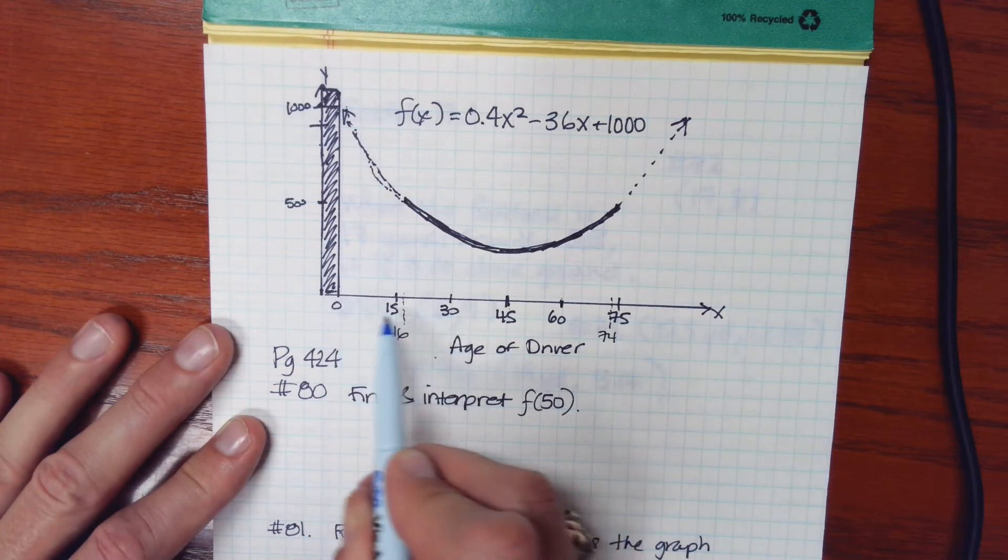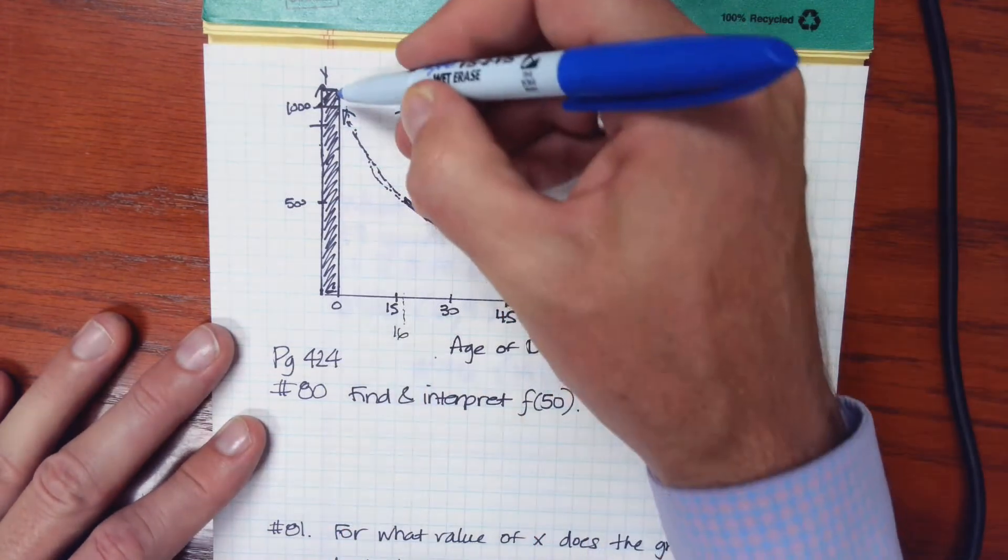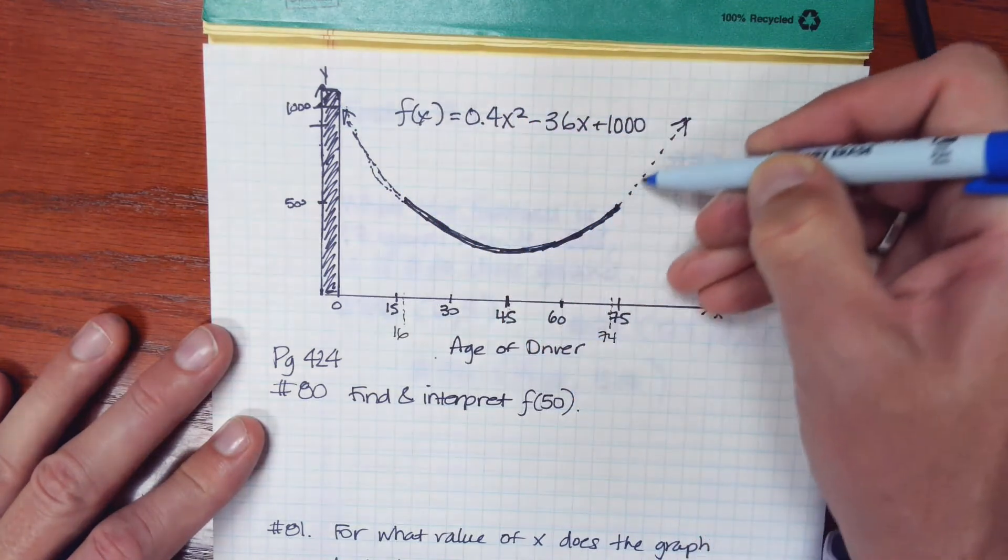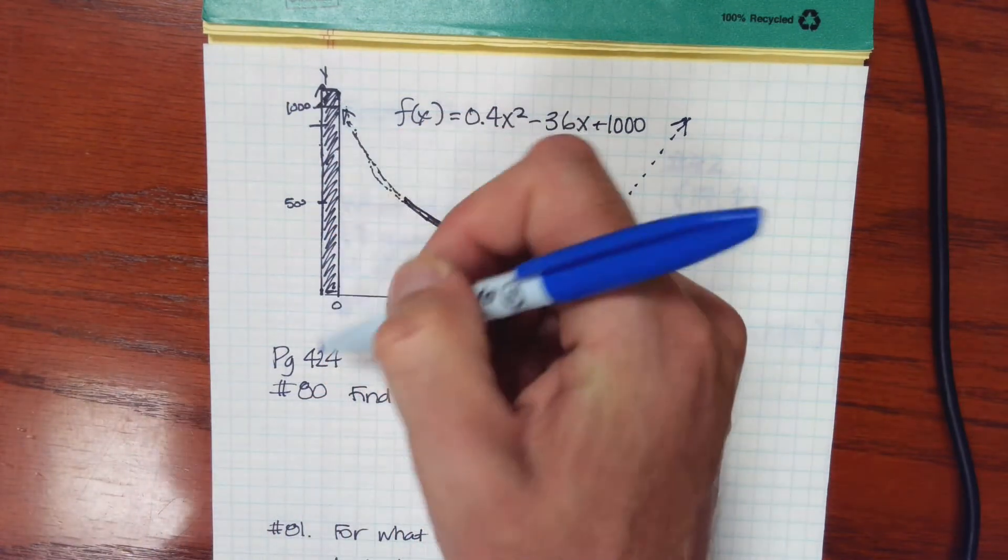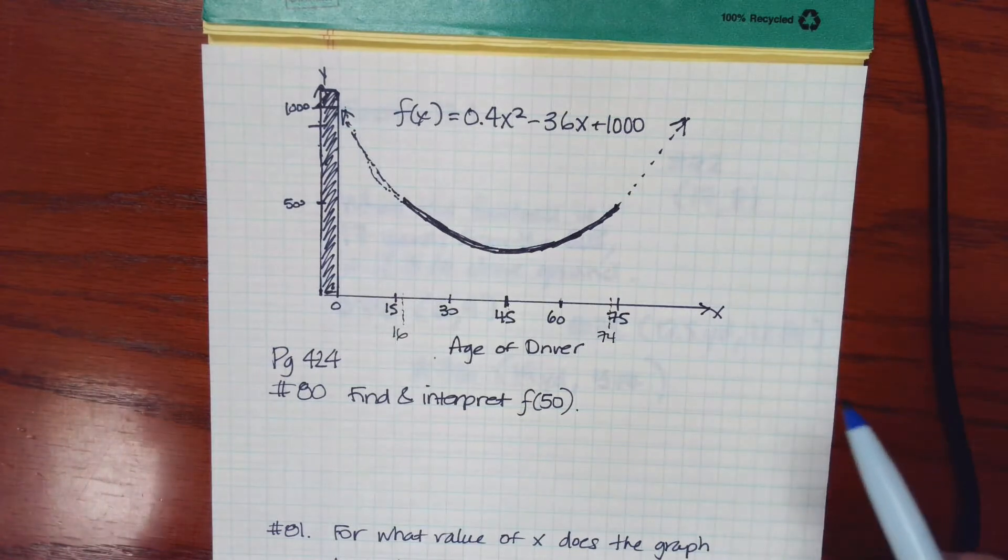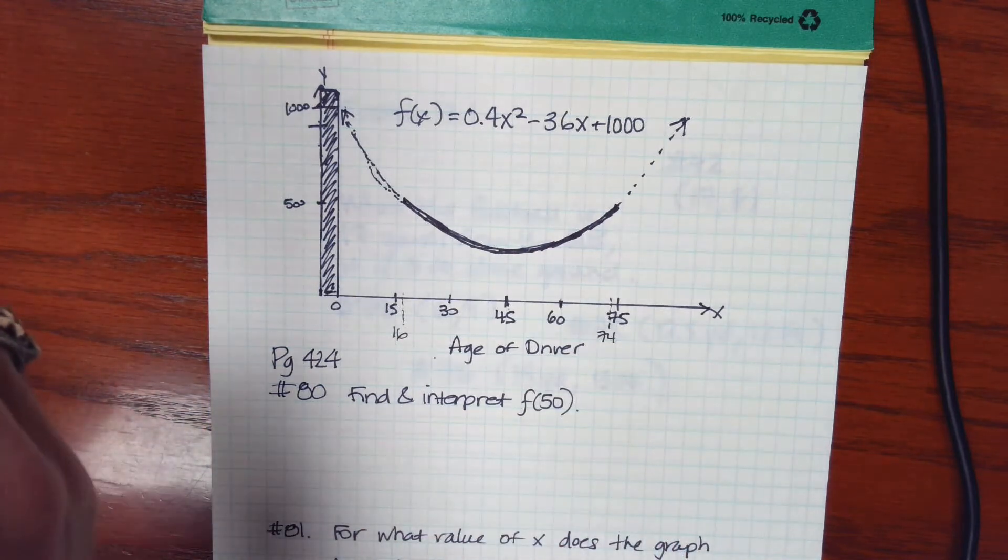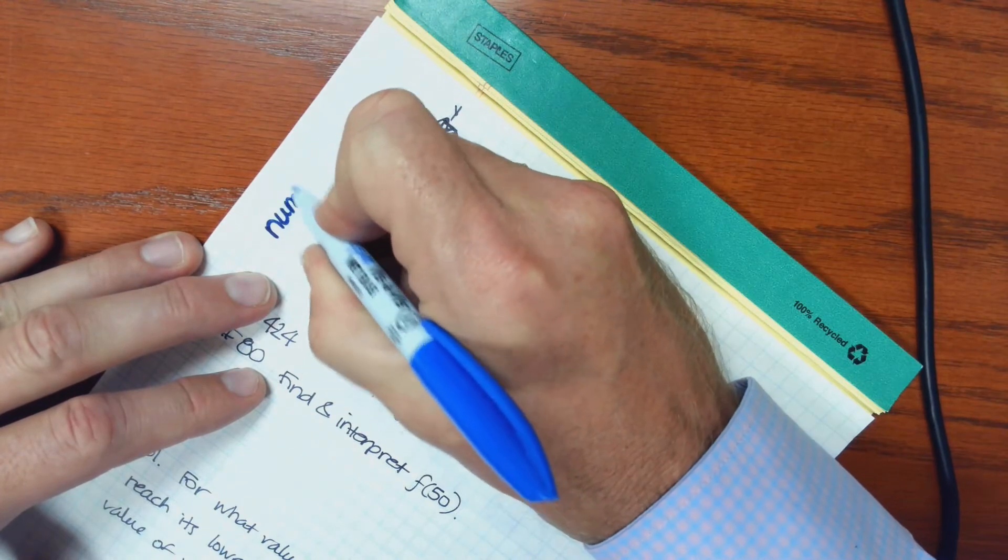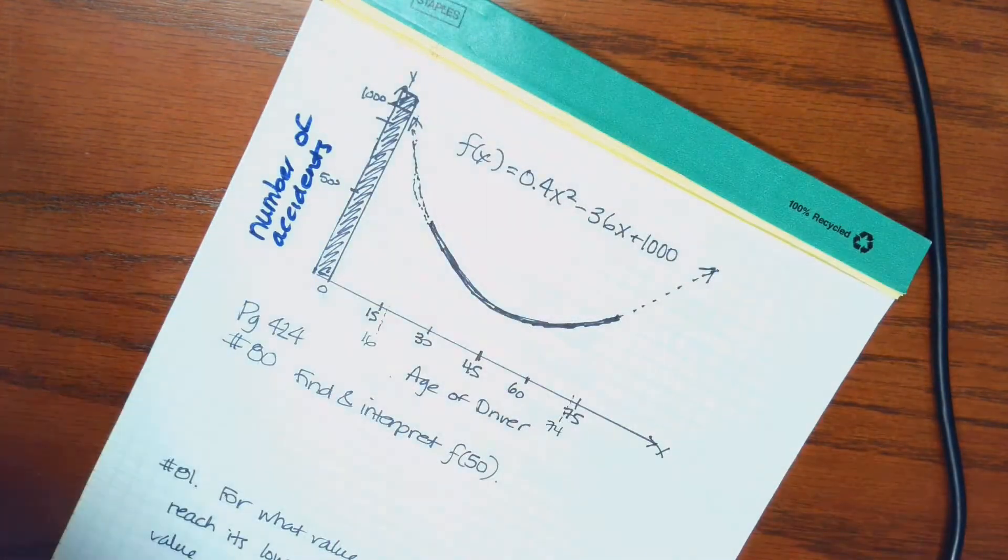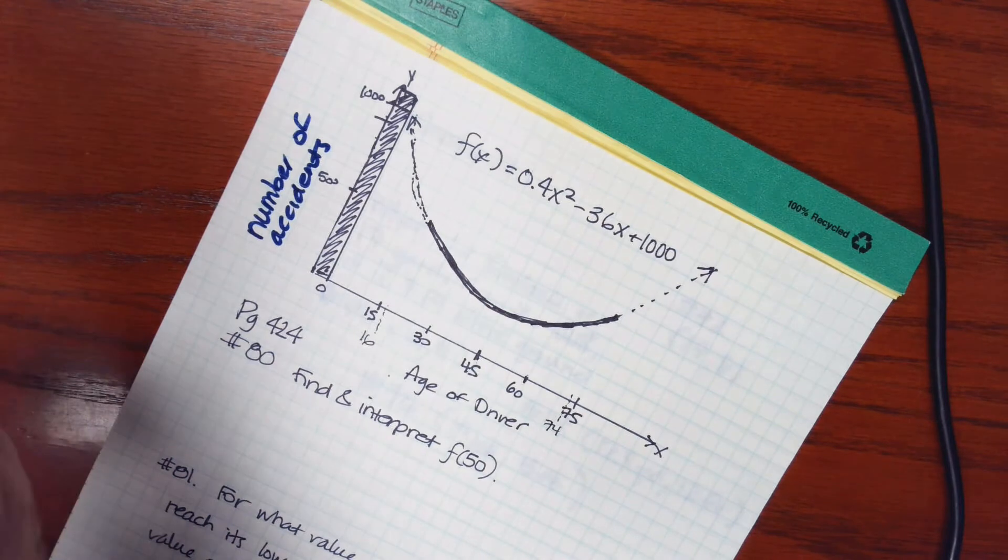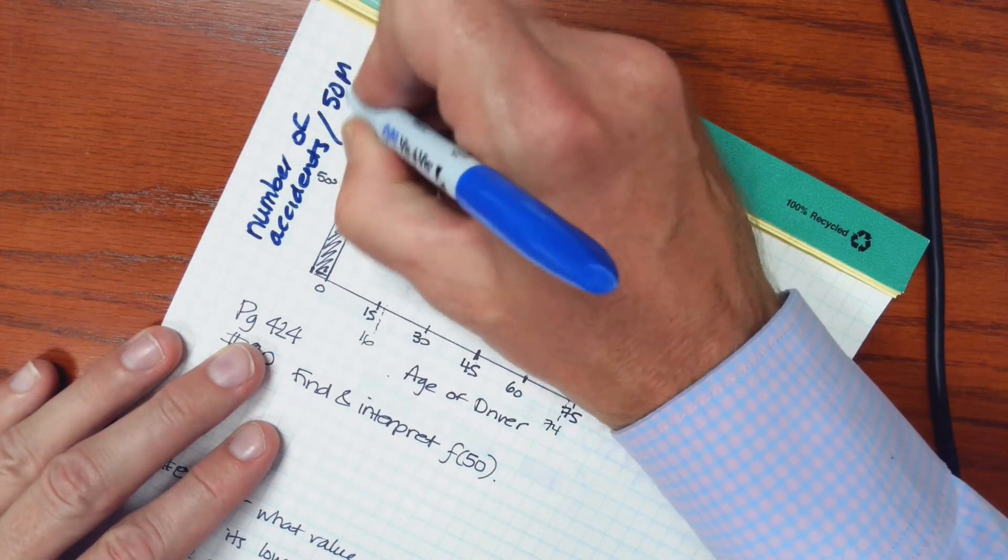So I have this margin increments of 15, 30, 45. But I've added a couple values. There's 16 and 74. The graph is represented here by this parabola. On the axis here, we have, this is, let's see, I've got to remind myself, that's on page 424. Those are the number of accidents per 50 million miles.